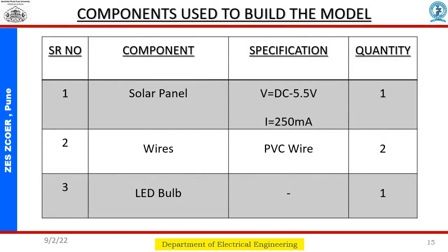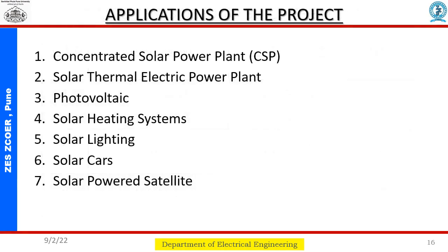In this slide we list all components used to build the model: a solar panel, PVC wire, and an LED bulb. The most common applications of this project include concentrated solar power (CSP) plants, solar thermal electric power plants, photovoltaic solar heating systems, solar lighting, solar cars, solar power satellites, and many other projects.